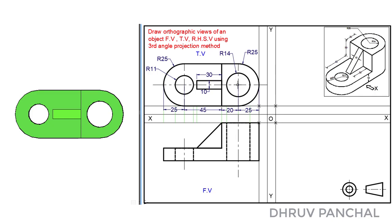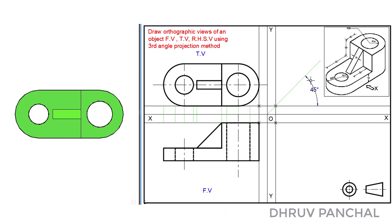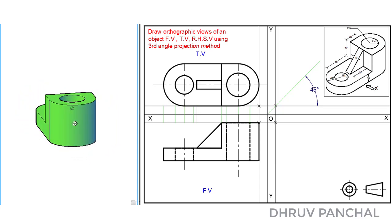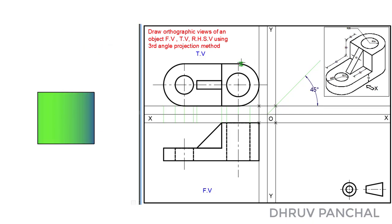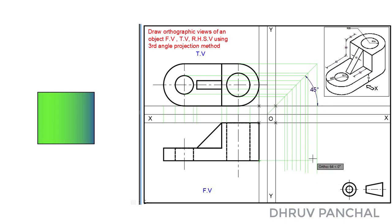Now, to draw the right-hand side view, we have to transfer the projections of the top view to the right side of the front view. For that, with the help of a protractor from point O, draw a line of any length at an angle of 45 degrees, as shown. Let us observe the right-hand side view of the given 3D object with respect to the direction of view. With the help of a roller scale, take the projections of each point of the top view up to the 45-degree line and transfer it in the downward direction, as shown.